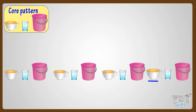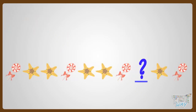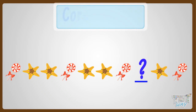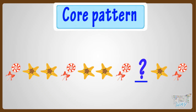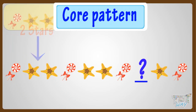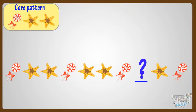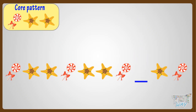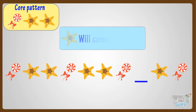Now just help me out in one last pattern. Let's find out the core pattern first. The pattern that is getting repeated here is a candy, and then two stars. Now we will find out what should come in the blank space to complete the pattern. From the core pattern, we see that after candy, we have to put two stars. So a star will come after the candy.